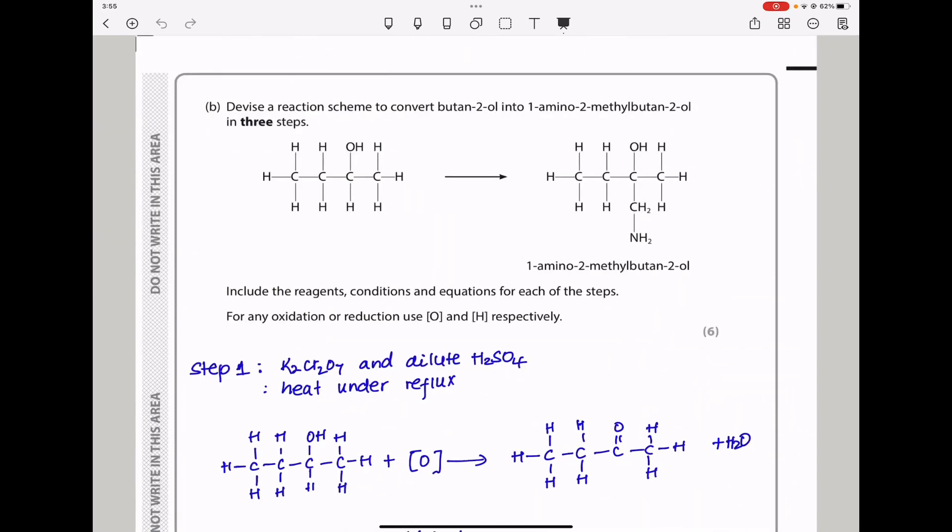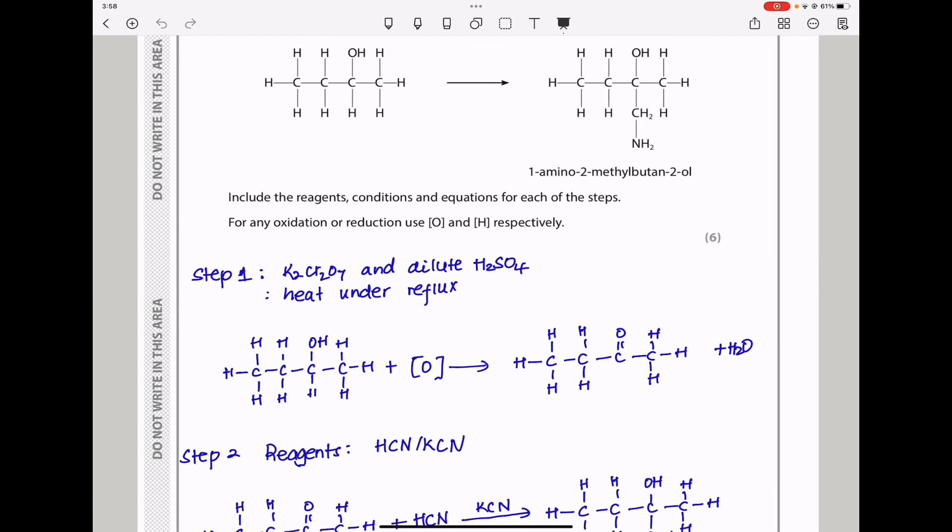Devise a reaction scheme to convert butan-2-ol into one amino, two methyl butan-2-ol in three steps. We're trying to convert this into that, going through a route of nitrile production. To produce a nitrile, we need to oxidize this to create a carbonyl compound. They say include reagents, conditions, and equations for each step. For any oxidation or reduction, use oxygen in square brackets or hydrogen in square brackets respectively.